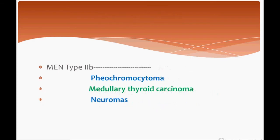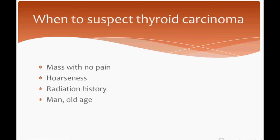MEN type 2b includes pheochromocytoma, medullary thyroid carcinoma, and neuromas. In exam questions, they may give a history of medullary thyroid carcinoma and ask which of the following could be associated with this disease — so you need to remember these MEN syndromes.